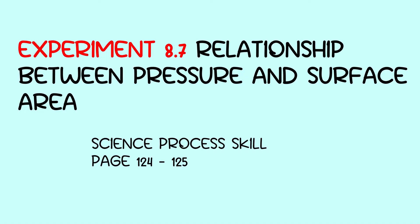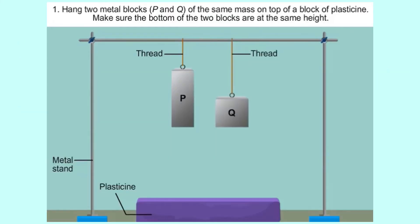Let's see experiment 8.7 in the Science Process skill book. In the experiment, you will have two metal blocks with the same mass, plasticine, retort stand with clamp, ruler and string.